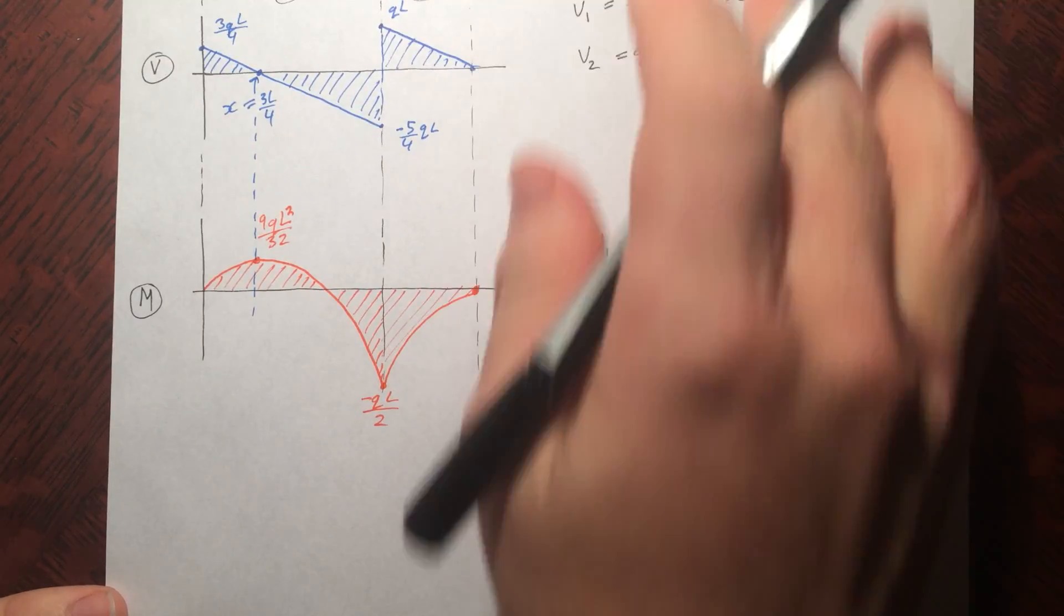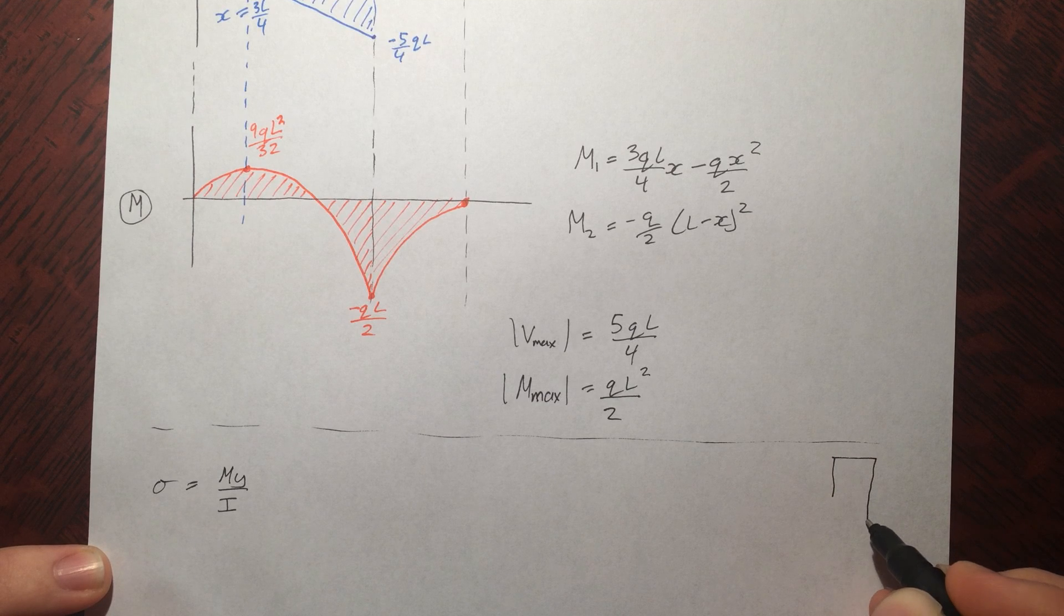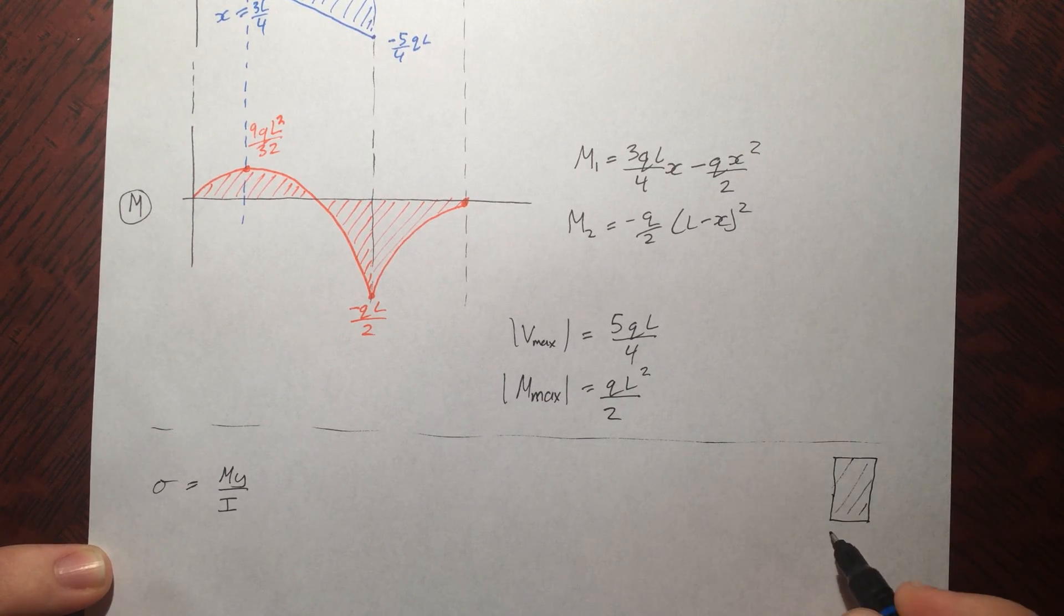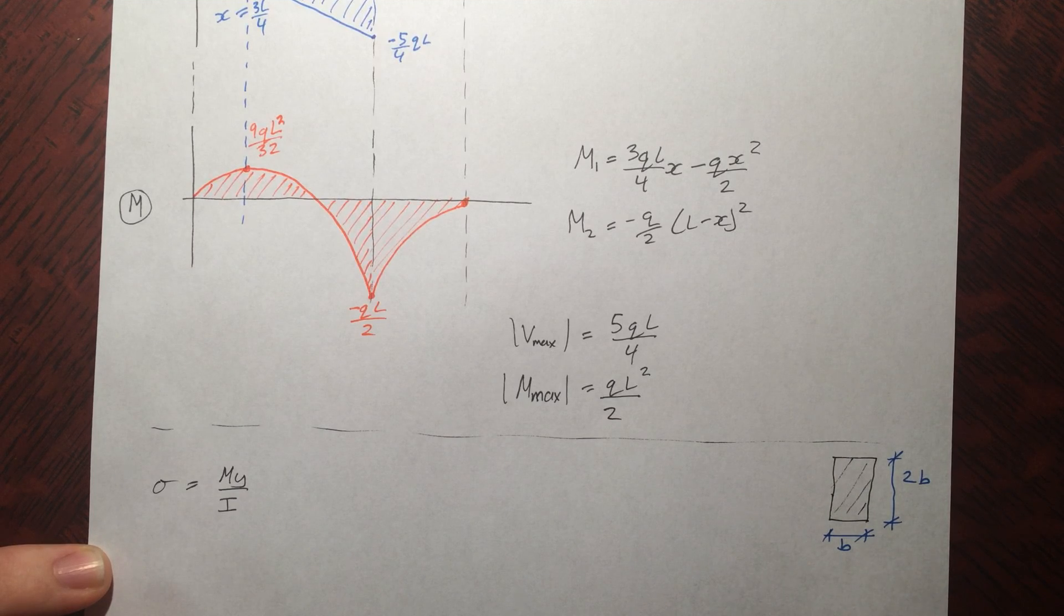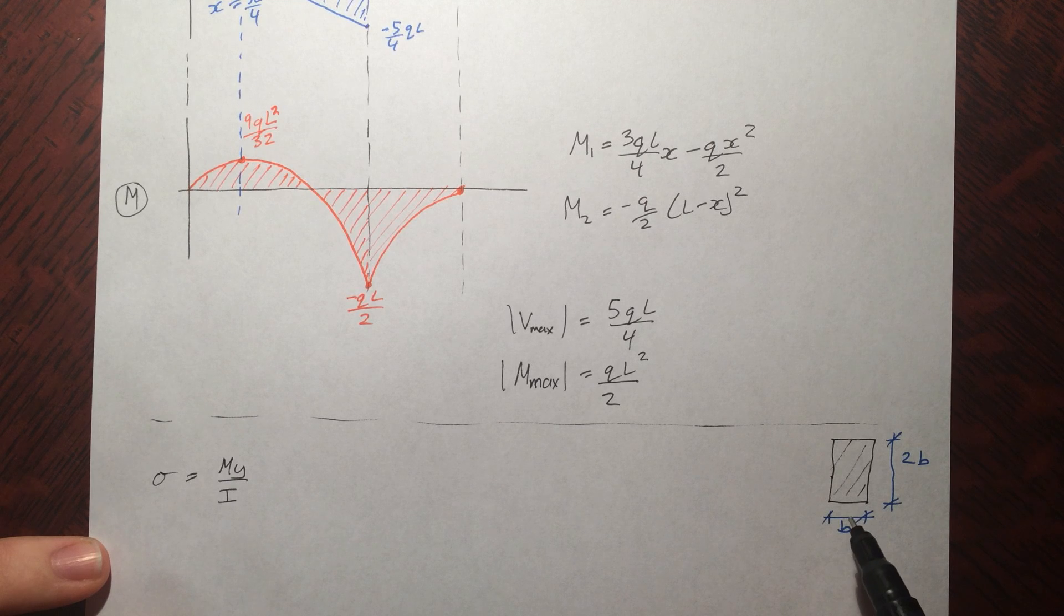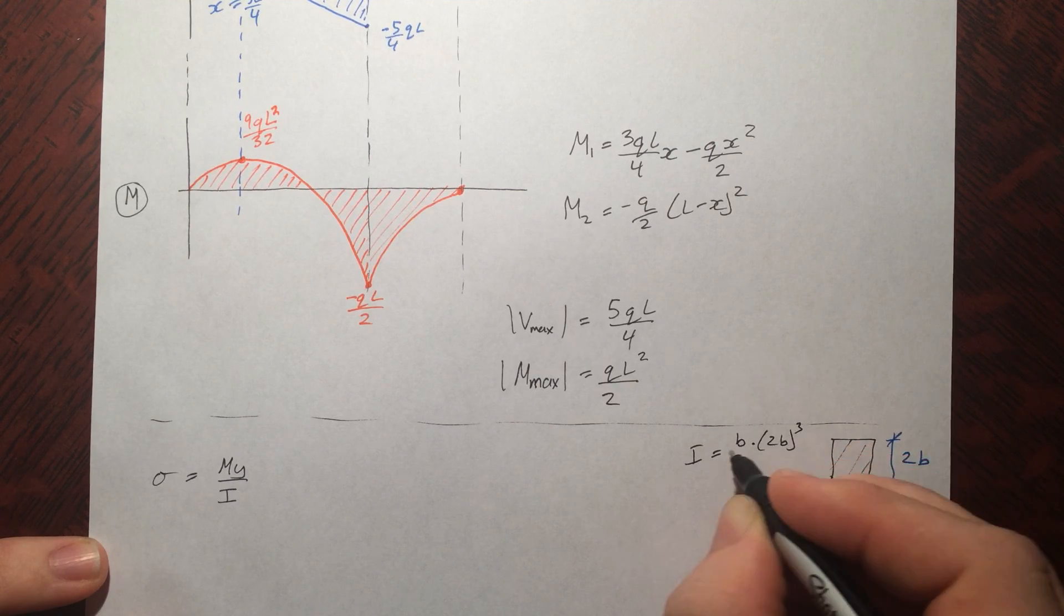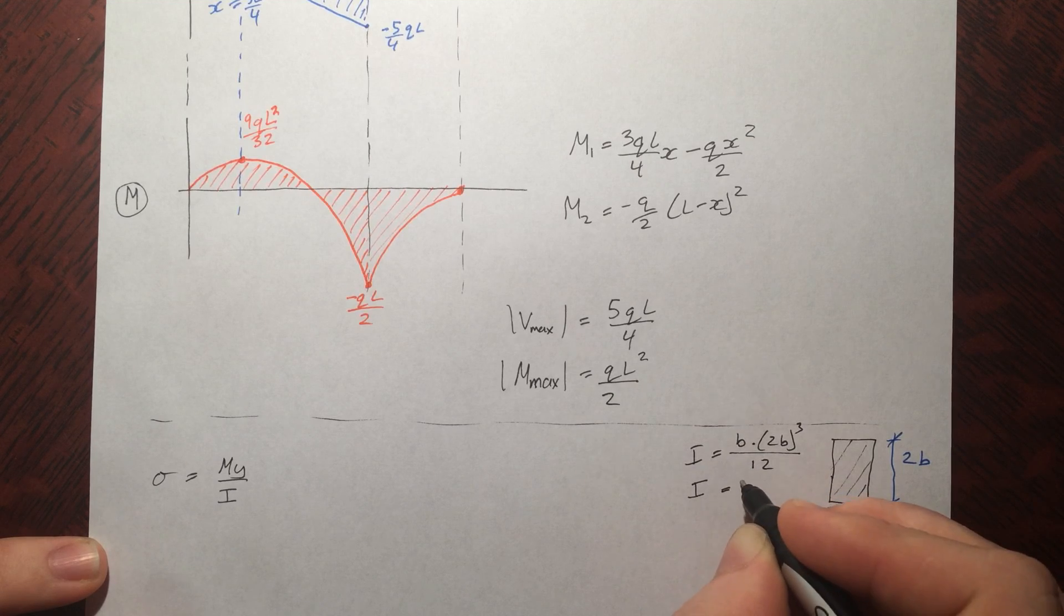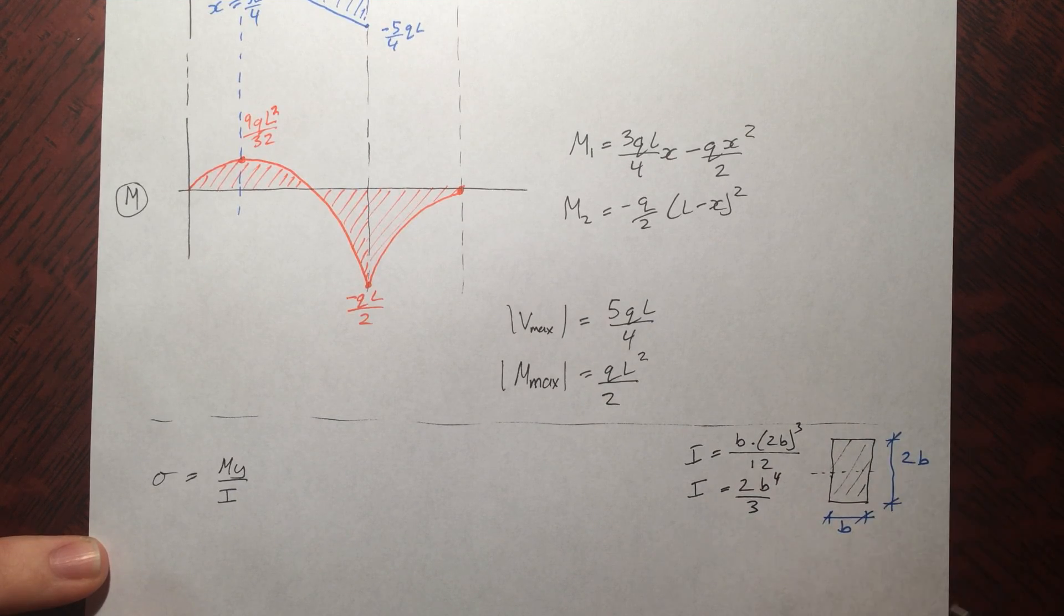All right so now let's go into calculating what they actually are using these equations. All right so the moment of inertia of this cross section, if I just draw it back up here, the moment of inertia is b h^3 which is 2b cubed by 12. And the y distance up from the centroid in this case is b, so y equals b in our case. So plugging these all together...